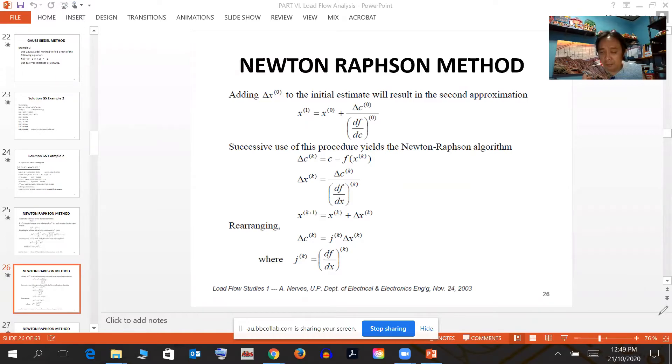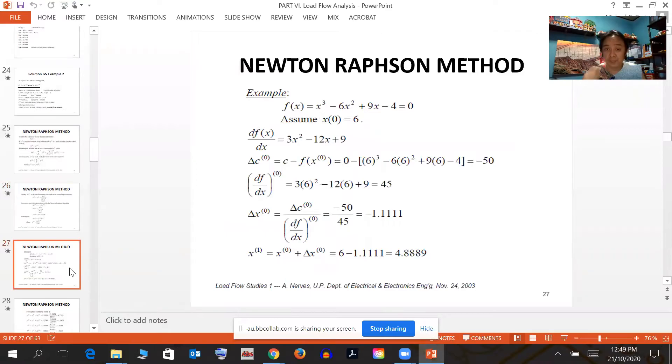We can get J(k) by having the differential of the function. Let's have an example to give it application. For example, with the same equation as before: x cubed minus 6x squared plus 9x minus 4. We assume a value. Our x zero will be 6.